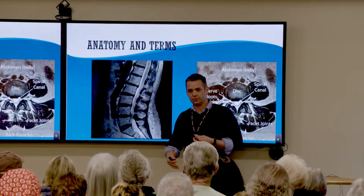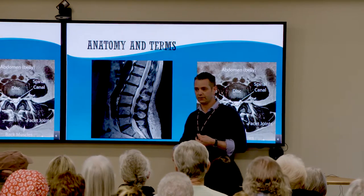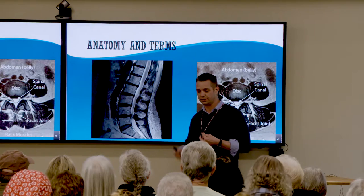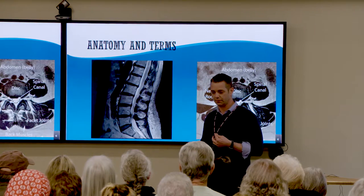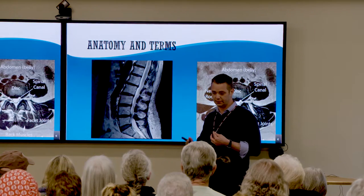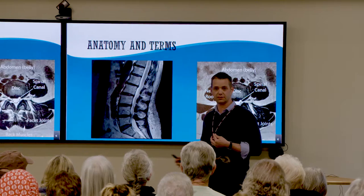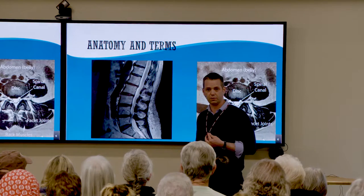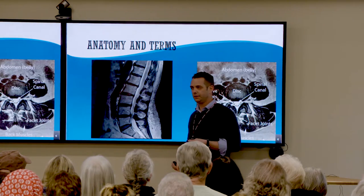Then we go to the MRI and look at the same arrangement and see if an L4-5 disc herniation pushing on the traversing L5 nerve nicely explains your symptoms. That's the way it should work: I listen to you, you tell me a story, I have an internal dialogue with myself and then with you, we look at the imaging, it supports what you've told me, and now we have a plan that makes sense.